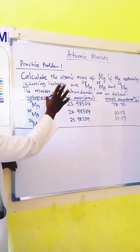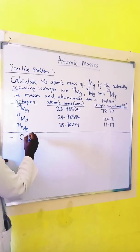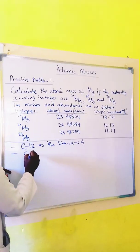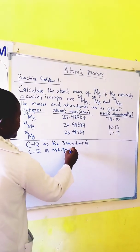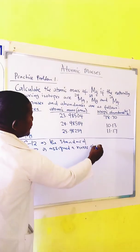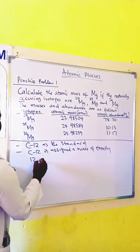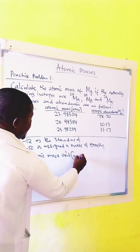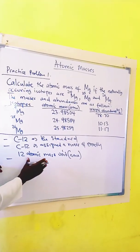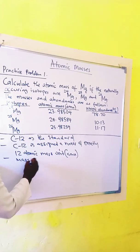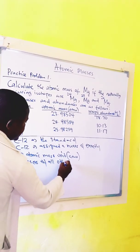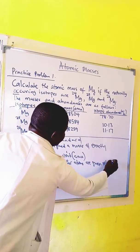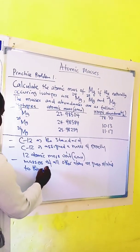Atomic masses. The modern system of atomic masses is based on carbon-12 as the standard. In this system, carbon-12 is assigned a mass of exactly 12 atomic mass units (amu). The masses of all other atoms are given relative to this standard.